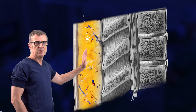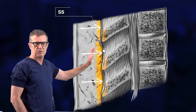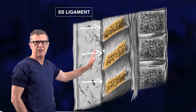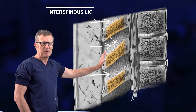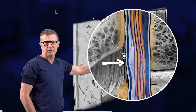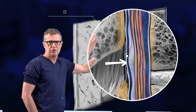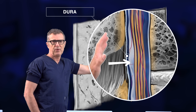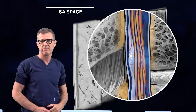Those layers are: skin, subcutaneous tissue, supraspinous ligament, interspinous ligament, then the ligamentum flavum, the dura, and finally the subarachnoid space.